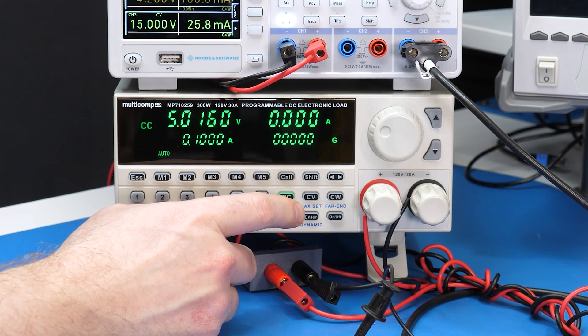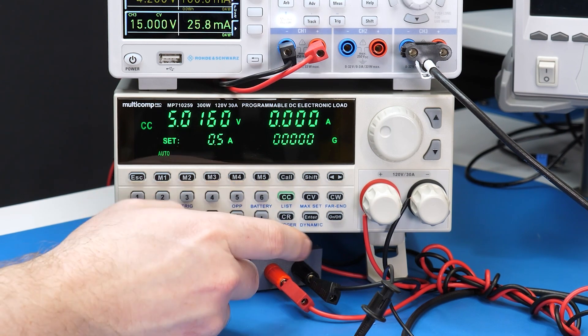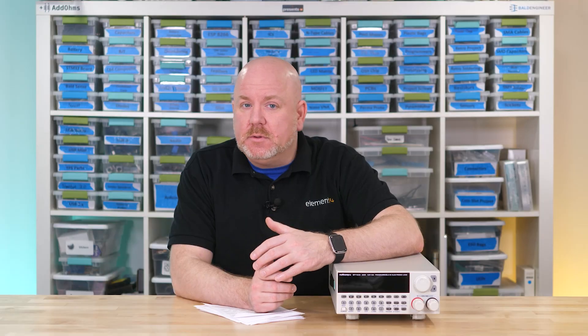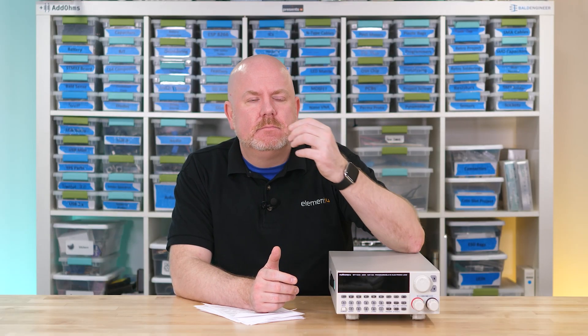At this point, I could go back into the constant current mode and set a specific point for more detailed analysis. For example, you could verify the efficiency of the converter at each of those stages one at a time. That would be a good video topic. Anyway, next up, let's look at a related feature called dynamic, and how we can use it to evaluate a pulse response.